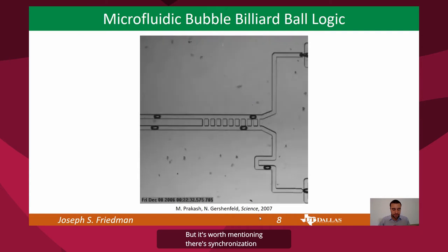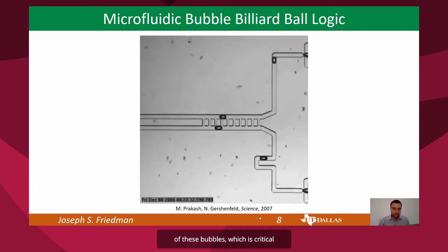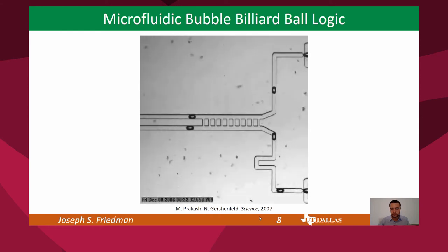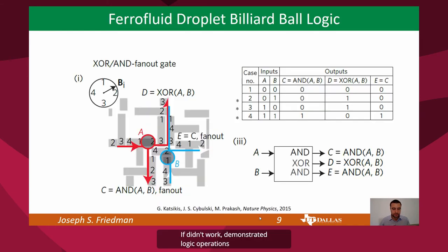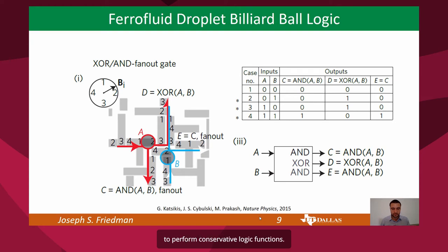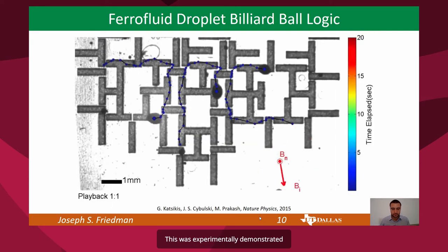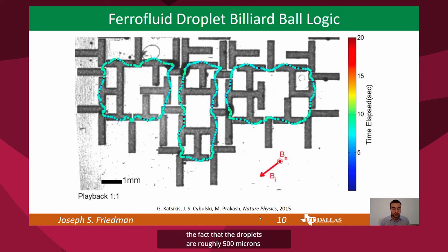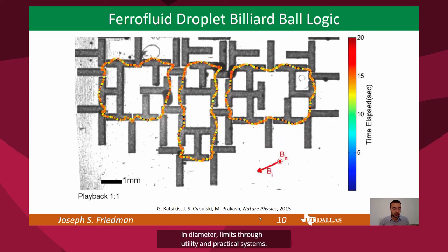It's worth mentioning their synchronization of these bubbles, which is critical to the correct functionality of any billiard ball logic gate. As you can see in this video, this ladder structure helps the bubbles become synchronized. A leading work demonstrated logic operations with ferrofluid droplet billiard balls, in which a rotating magnetic field causes these ferrofluid droplets to collide to perform conservative logic functions. This was experimentally demonstrated, showing repeated and consistent operation. Again, while this is very exciting experimental work, the fact that the droplets are roughly 500 microns in diameter limits their utility in practical systems.